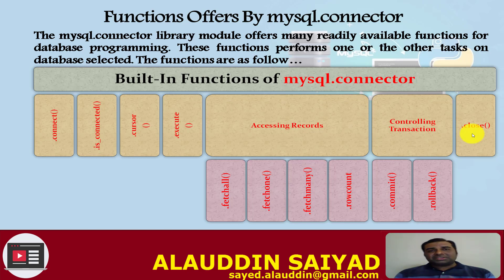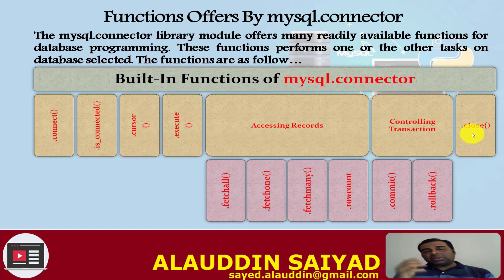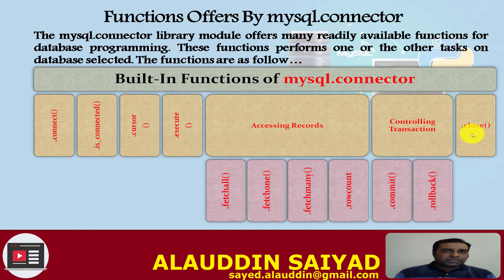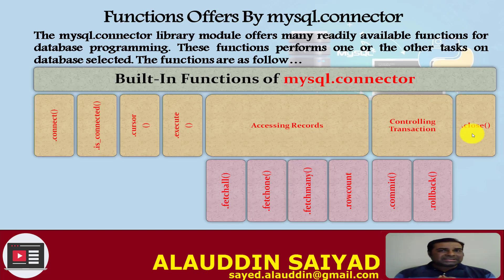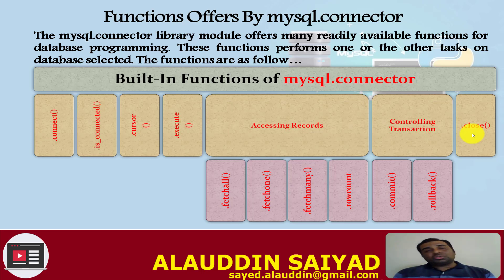If you want to fetch a few records at a time, use fetchmany(), which accepts an integer as a parameter. For example, fetchmany(3) fetches the first three records. A subsequent fetchmany(2) brings the next two records from the result set, as the first three are already fetched. The rowcount() function returns the number of rows or the record count from the result set.